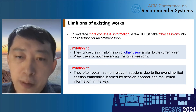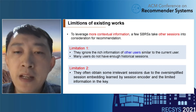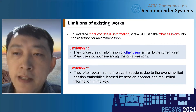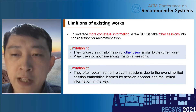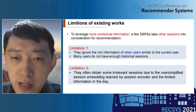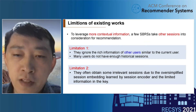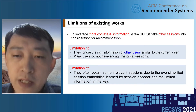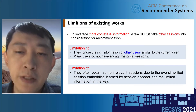To leverage more information, some existing methods consider other sessions for recommendations. But in a session dataset with many short sessions, these methods have limitations in where to find other sessions and how to use them. Some works use historical sessions of the same user, which ignores the rich information from other users similar to the current user. Besides, most users do not have many historical sessions to retrieve.